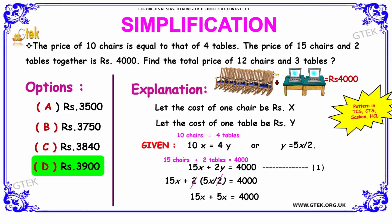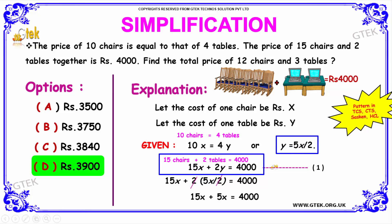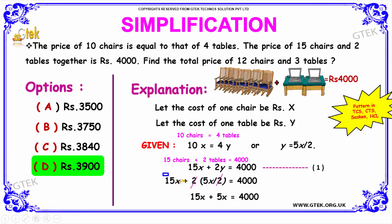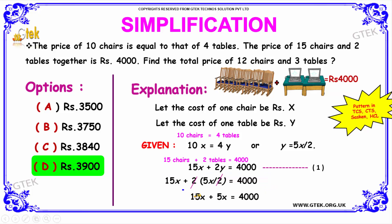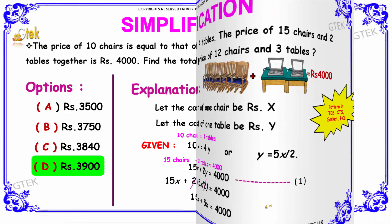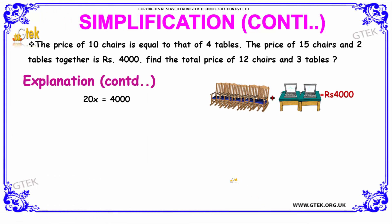From the second condition, the price of 15 chairs and 2 tables together is Rs. 4000. The expression is: 15X plus 2Y is equal to 4000. Substituting the value of Y as 5X by 2, we get 15X plus 2 into 5X by 2 is equal to 4000, which simplifies to 15X plus 5X is equal to 4000, giving 20X is equal to 4000.